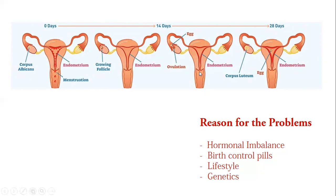At that time, the endometrium lining will be very thick, and you will be able to conceive. If conception does not occur, you will develop a period — the endometrium lining will shed. But if your egg contacts the sperm and the lining is ready, you will get pregnant.